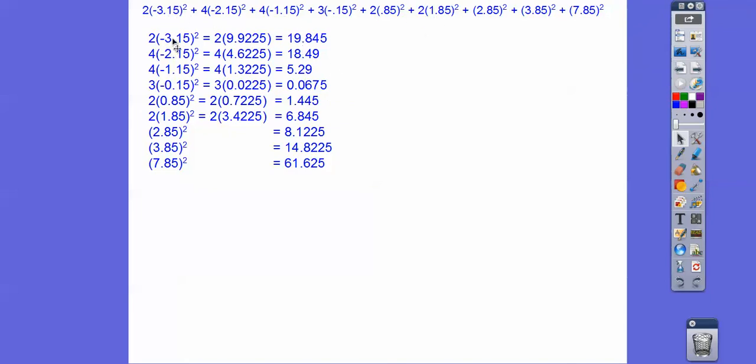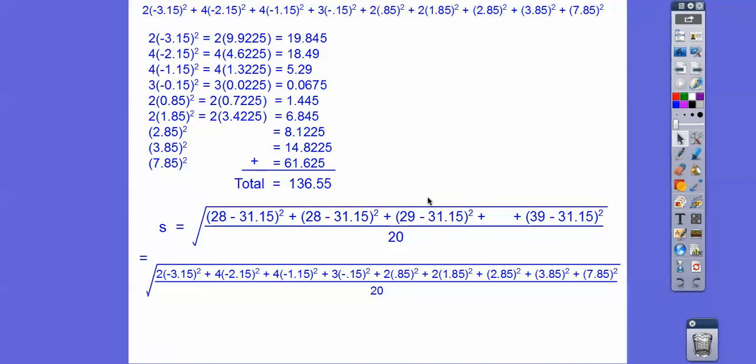Now I square them. So I do the squared times 2. And that gets me this right here. So I square that, gets me that, times 4 is that. So here's all those numbers squared. And now I've got to add those up, okay? So that's the numerator, okay? So that is this guy right here. So it's going to be 136.55 divided by 20. And then we square root that.